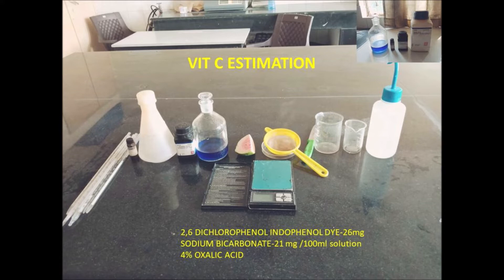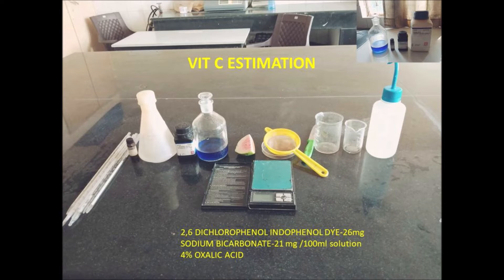We should prepare 40 ppm ascorbic acid solution, meaning 4 mg of ascorbic acid in 100 ml, which is equivalent to 40 mg per liter — 40 ppm. After preparing, take only 0.2 ml of this 40 ppm standard vitamin C solution and add 2.5 ml of 4% oxalic acid, then titrate it with the dye. Take the titrate value and use it for calculation of the dye strength relative to the standard vitamin C, then use this data to calculate vitamin C in the sample.